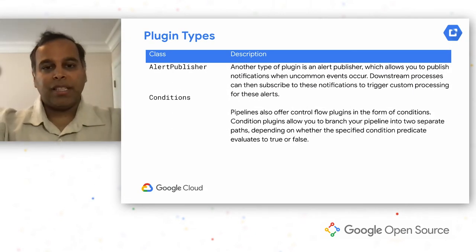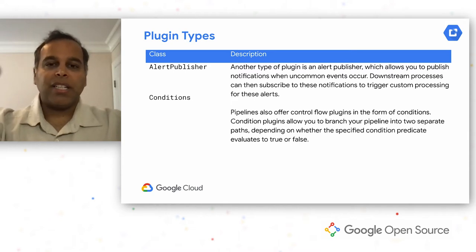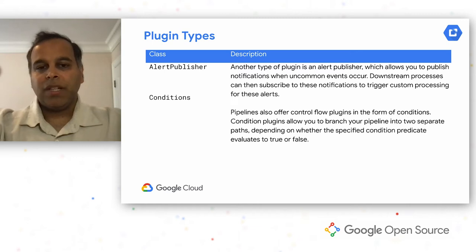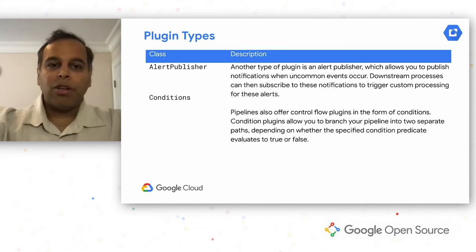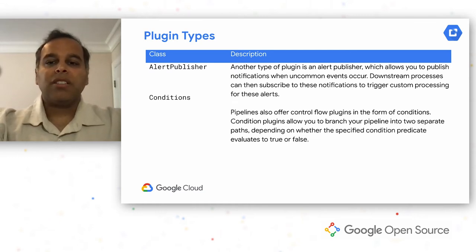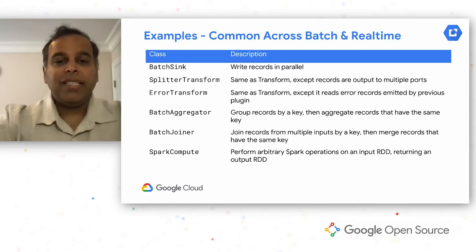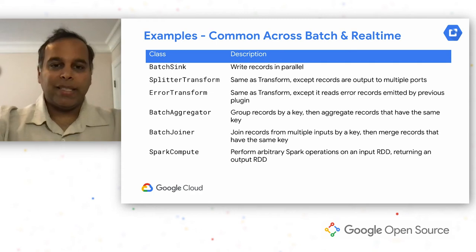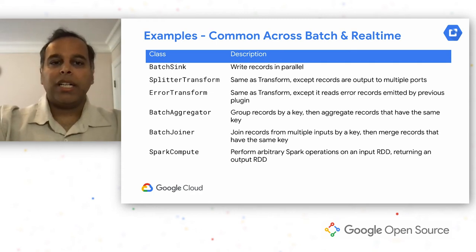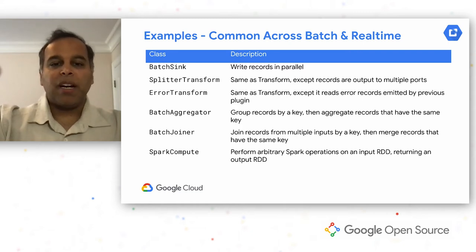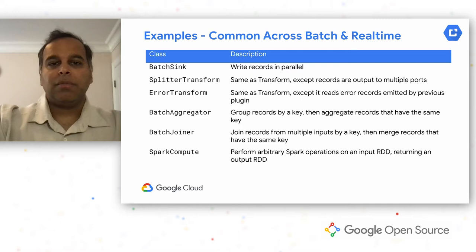The final two plugin types are alert publishers and conditions. Alert publisher lets you create a plugin that alerts you on a certain action or stage of your pipeline run — for example, sending an email notification if a pipeline failed or succeeded. Conditions can branch your pipeline into different paths, so you can perform a particular action when it's true versus false. These examples exist within CDAP and are common across batch or real-time plugins — a batch sink writes records in batches, and a spark compute lets you do Spark operations on an input data frame.